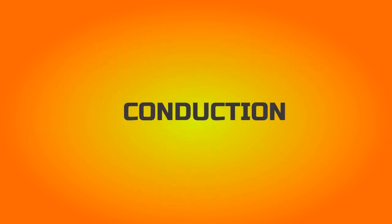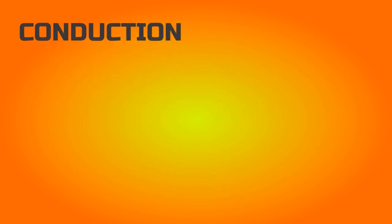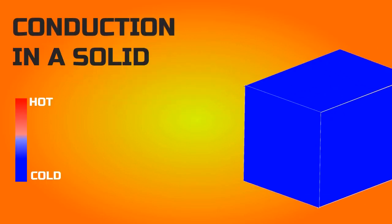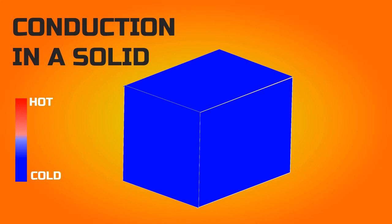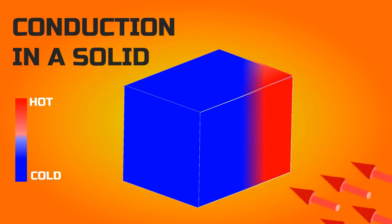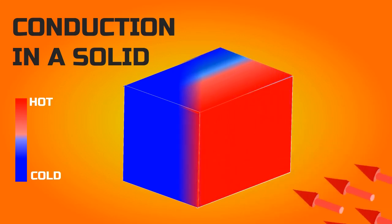In solids, heat transfer takes place by direct contact known as conduction. Take this blue cuboid. If we apply heat to its one side, it will be transferred to the other end, developing a gradual temperature gradient.